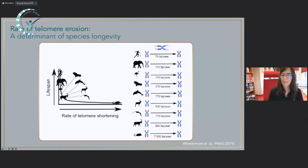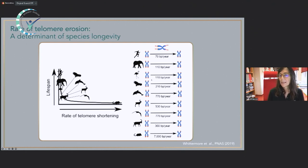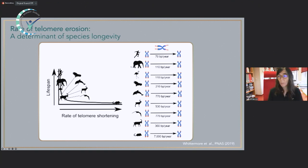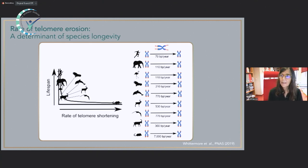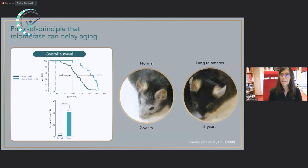We could fit the rate of telomere shortening to a power law, which could predict the longevity of a species just by knowing that rate. For instance, elephants and flamingos are very distant in evolution — one is a mammal, one is a bird — but they share the same rate of telomere shortening and the same longevity of around 70 years. This epigenetic factor is more powerful than genetics to understand longevity across species. Since telomere shortening is a cause of aging, we became interested in counteracting it. Telomerase can elongate telomeres, and our idea was to demonstrate whether increased telomerase expression could impact aging and longevity.